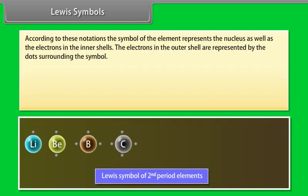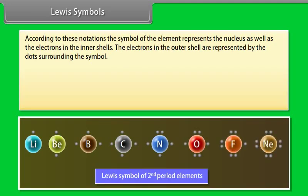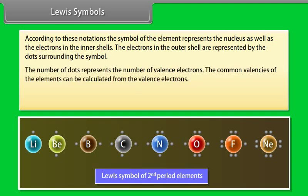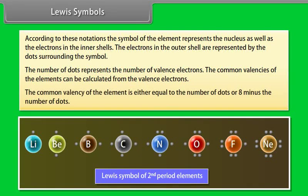Lewis symbols: according to these notations, the symbol of the element represents the nucleus as well as the electrons in the inner shells. The electrons in the outer shell are represented by dots surrounding the symbol. The number of dots represents the number of valency electrons. The common valency of the element is either equal to the number of dots or 8 minus the number of dots. For example, the common valencies of lithium, beryllium, boron and carbon are 1, 2, 3 and 4 respectively.